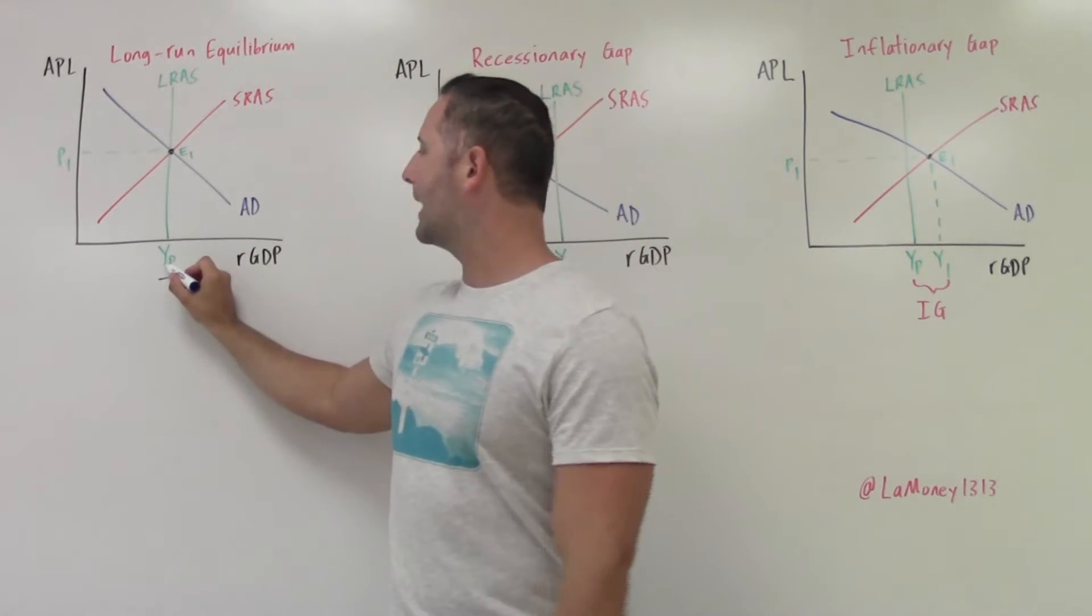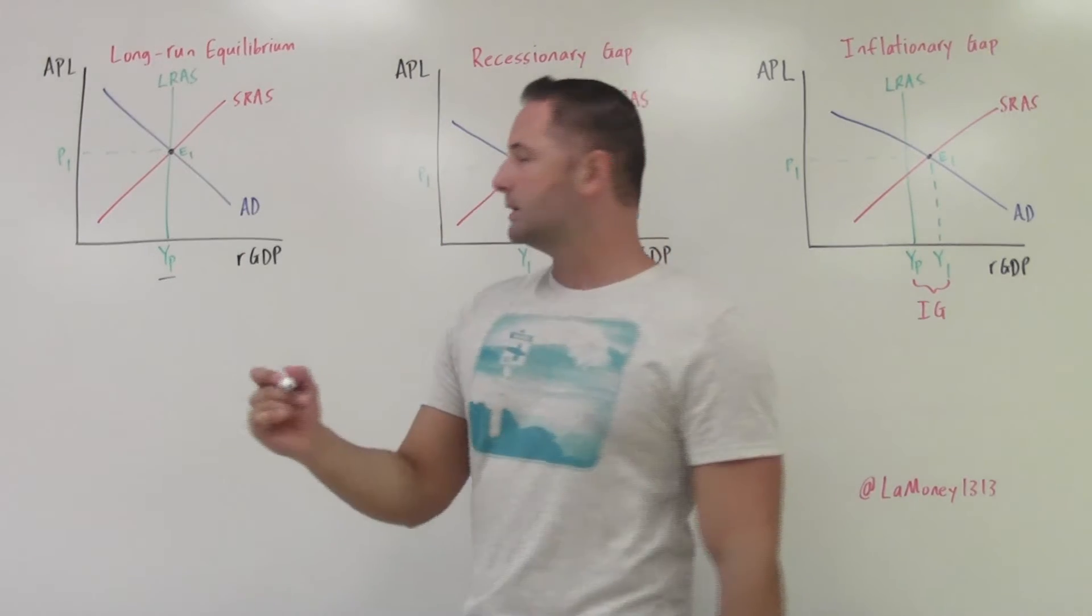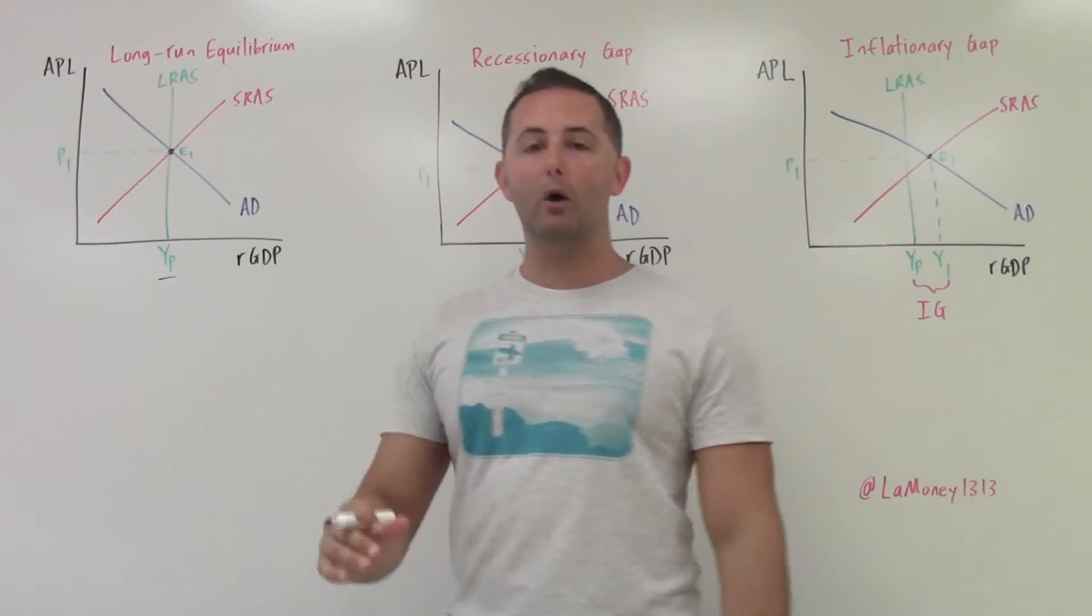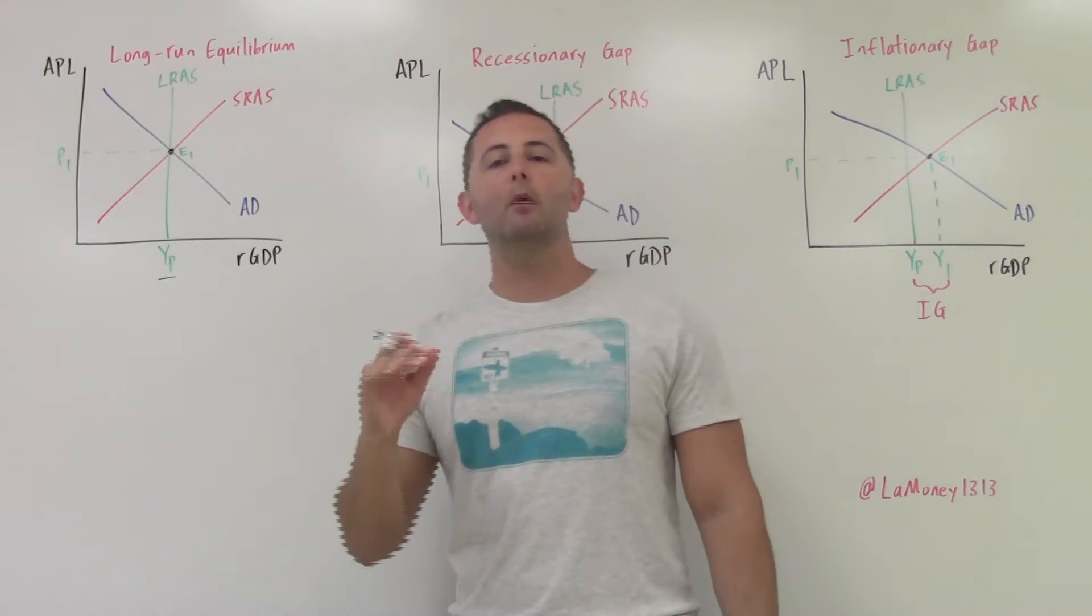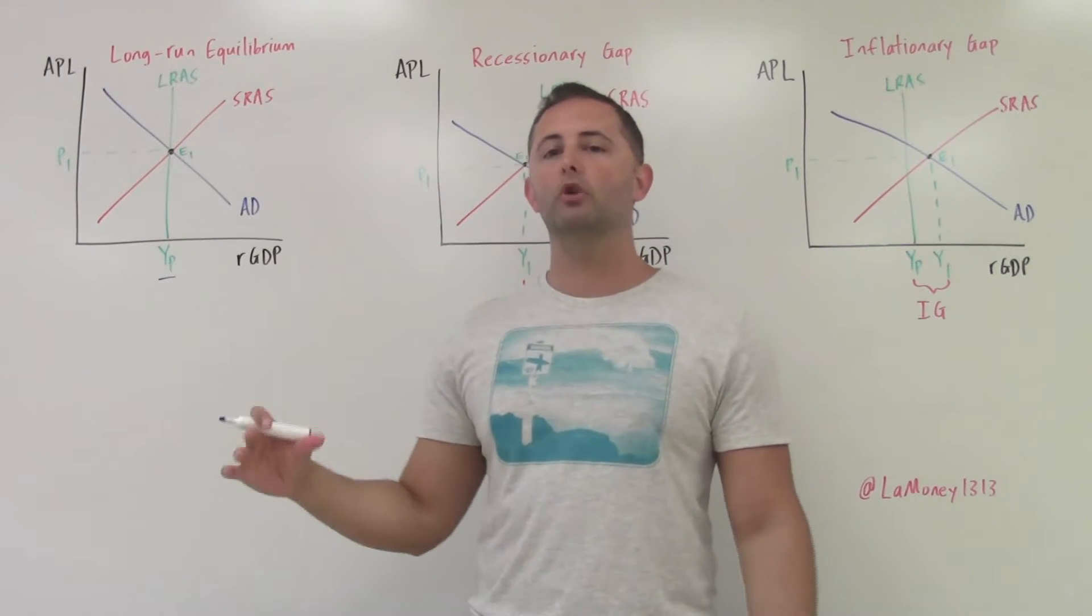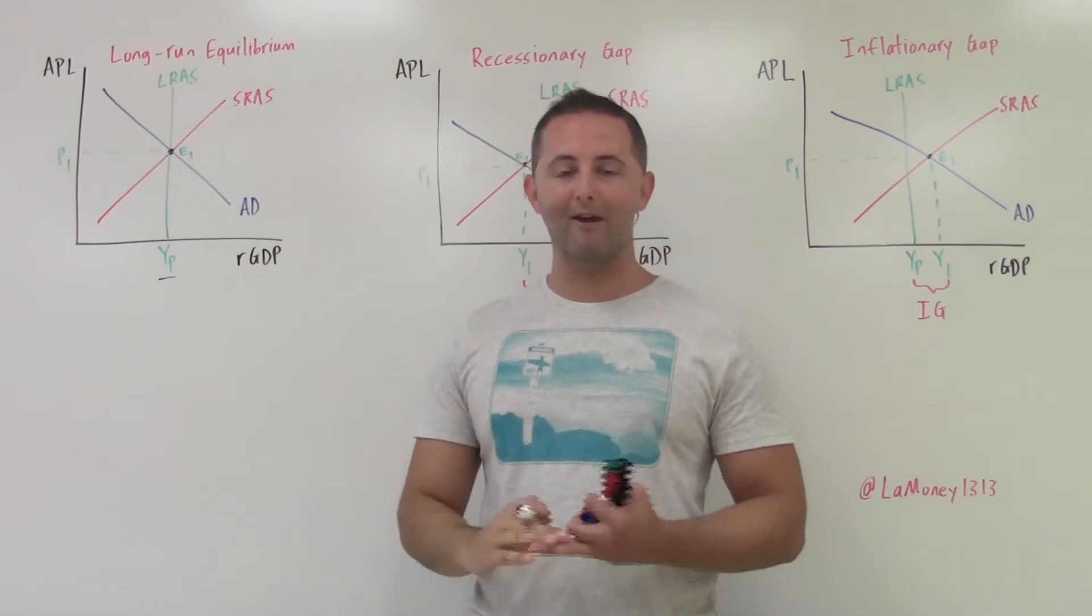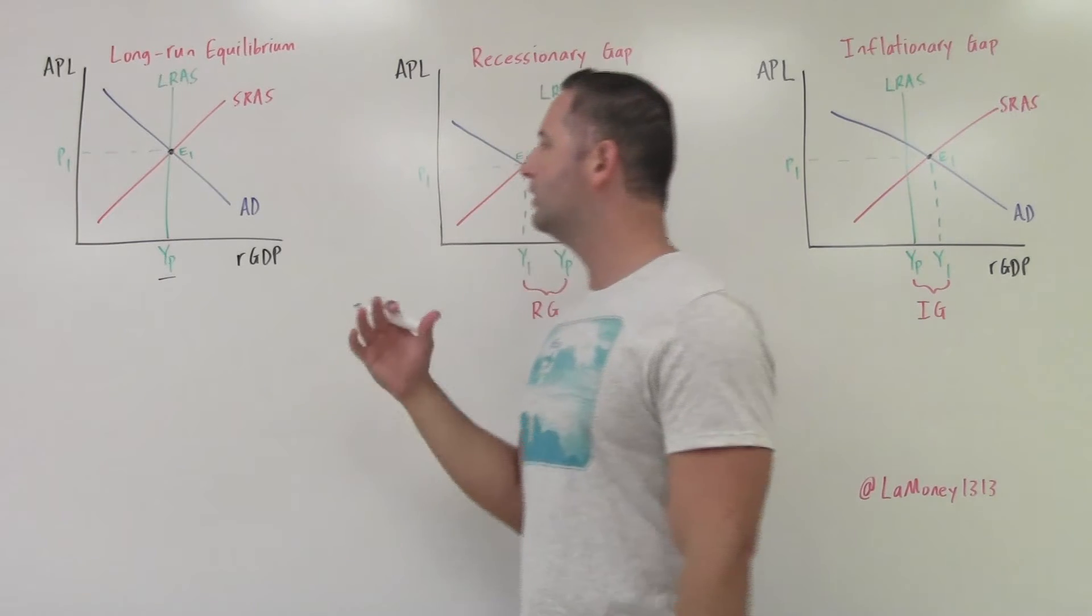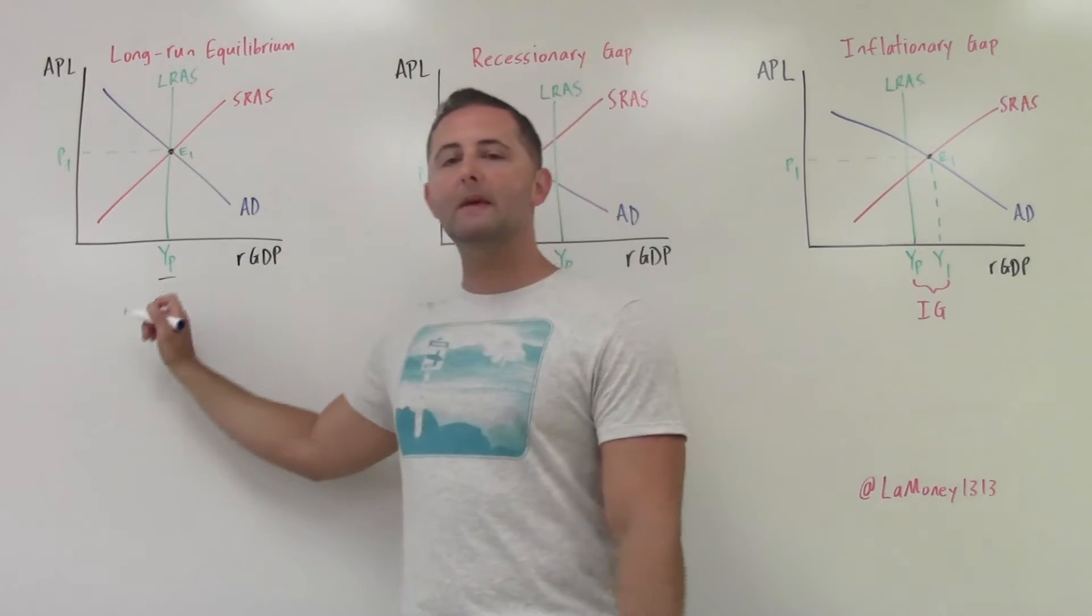So we're going to call it output, and that P is for potential. So YP is potential output. This is how much an economy produces in the long run once prices and wages have become flexible, so once they have had time to adjust.